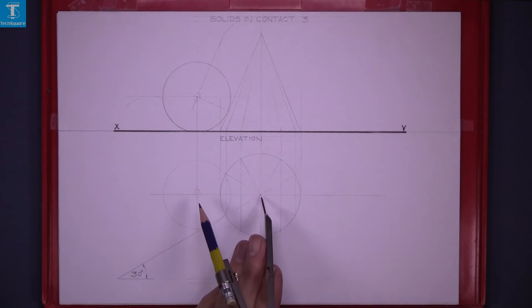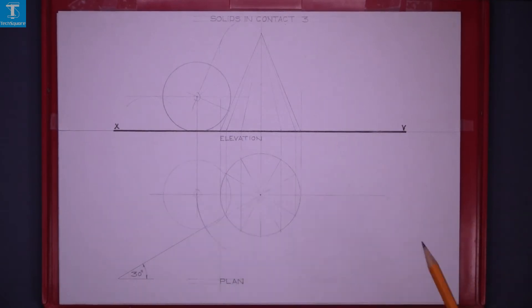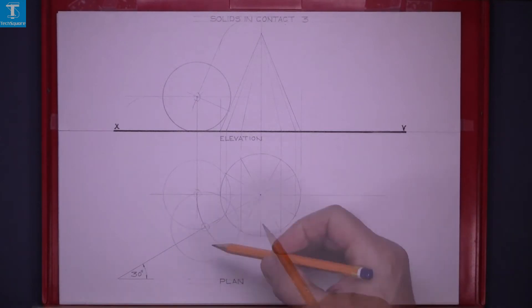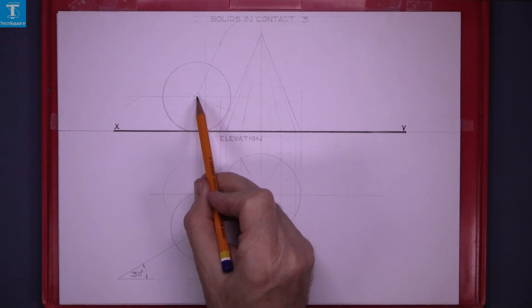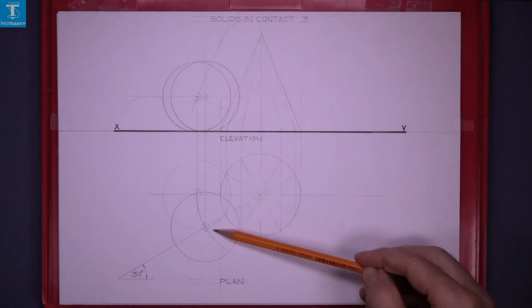Draw in your plan, now rotate that point around to the 30 degree line and that's your new centre. Project vertically up and draw horizontally across and that gets the new centre for the elevation and that's the elevation and plan in the position we require.